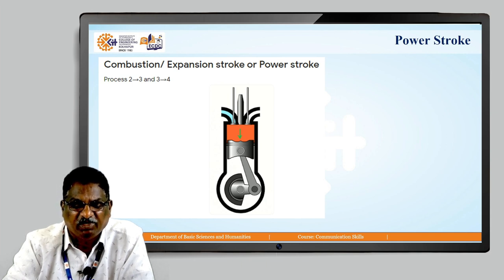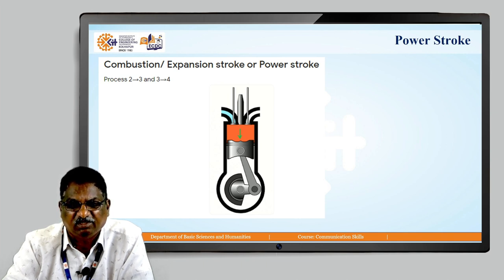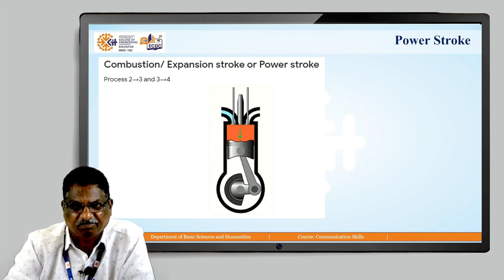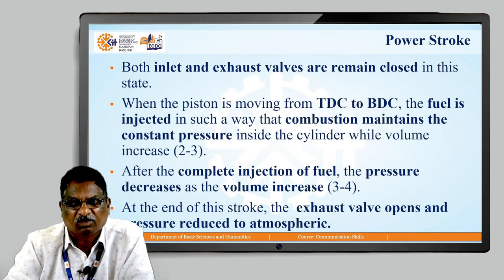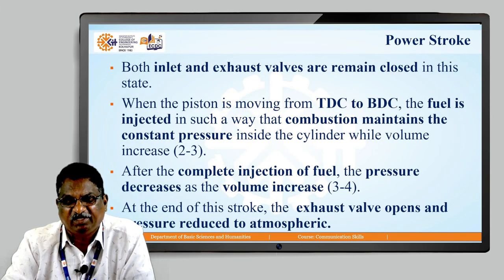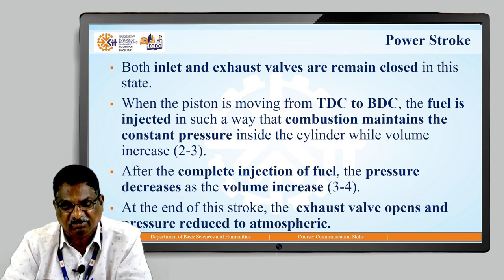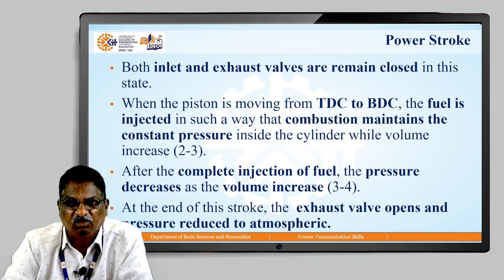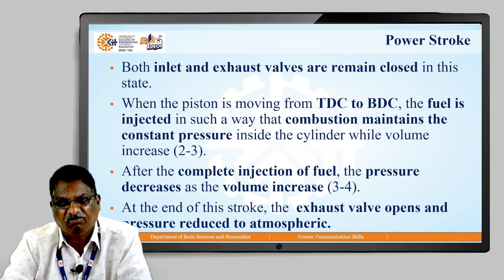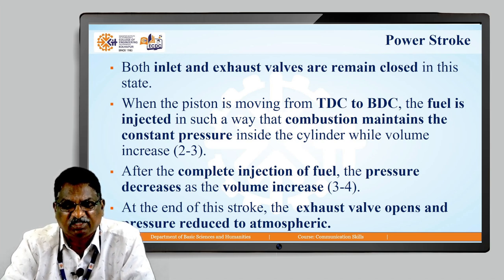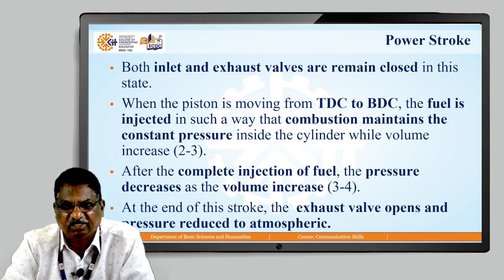This is the power stroke. The mixture is ignited and a high amount of pressure is created in the downward direction. Therefore, the piston is forced downward and mechanical energy is generated. Both inlet and exhaust valves remain closed. When the piston is moving from TDC to BDC, the fuel is injected such that combustion maintains constant pressure inside the cylinder while volume increases — that is process 2 to 3 from the PV diagram. After the complete injection of fuel, pressure decreases as volume increases — that is process 3 to 4 from the PV diagram.